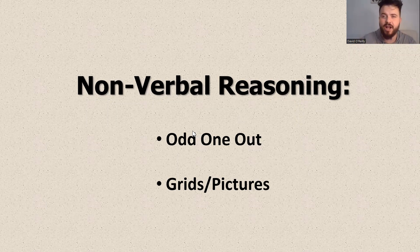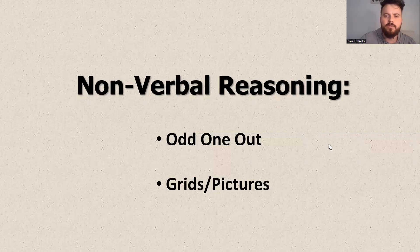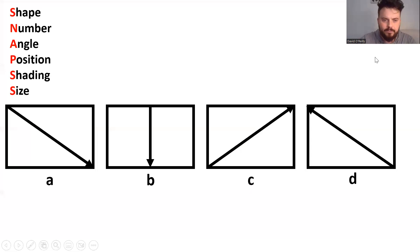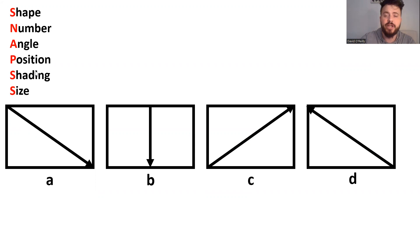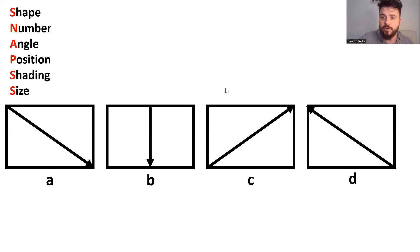We're going to start off with odd one out. On the screen we've got four objects and our job is to find which one is the odd one out — is it a, b, c, or d? One way to approach this is to think of the acronym SNAPS: Shape, Number, Angle, Position, Shading, and Size. Considering each of these factors will likely help us find the odd one out.